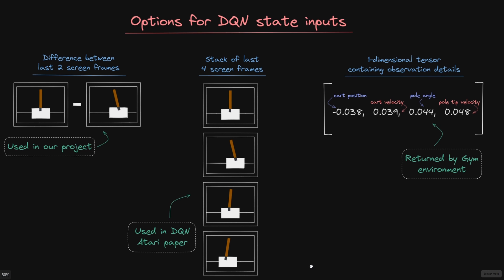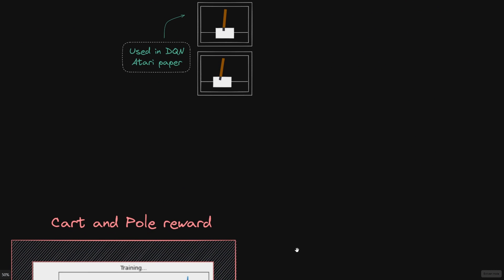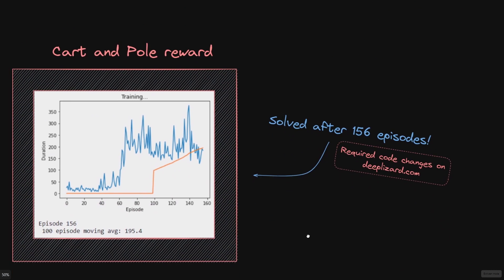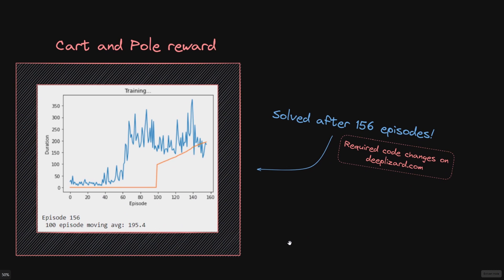And actually, we will look at the results that we got whenever we changed the state inputs to be the ones returned by gym. And we can see that with this change alone, our Deep Q network was able to solve this environment in just 156 episodes. So by episode 156, our 100 episode moving average had reached 195.4, and 195 is what is required to solve the environment.